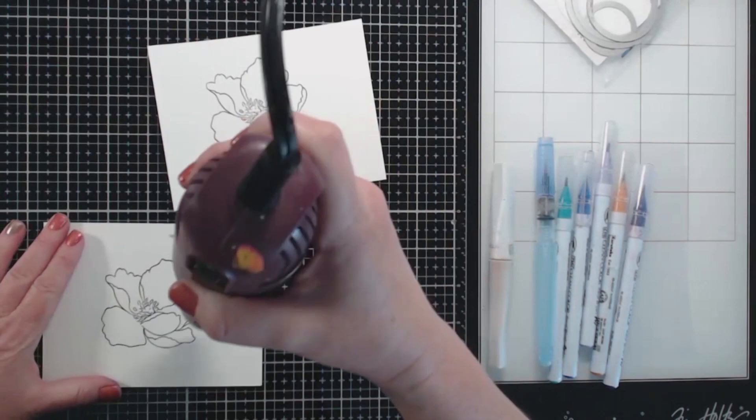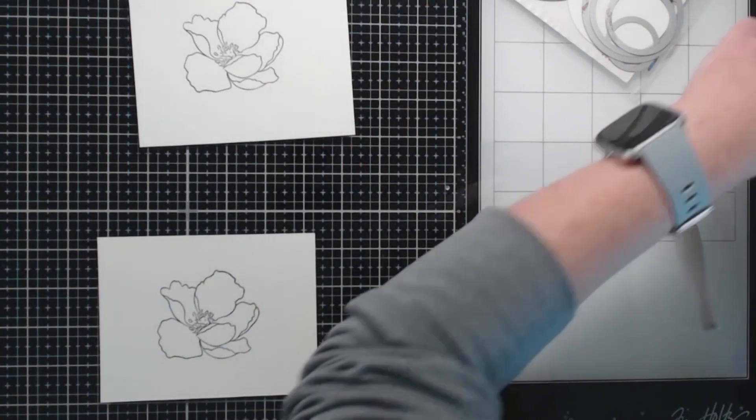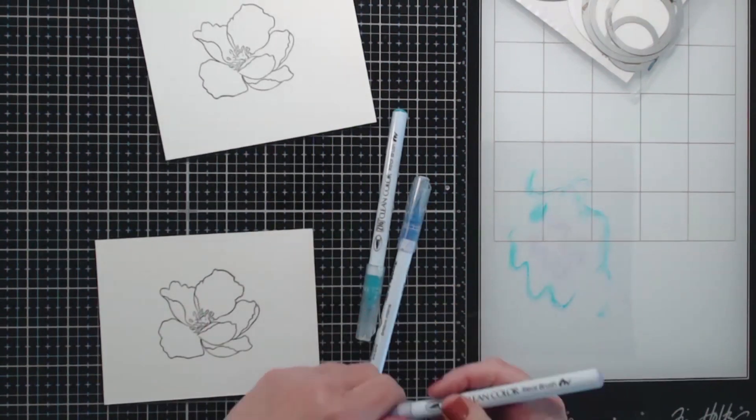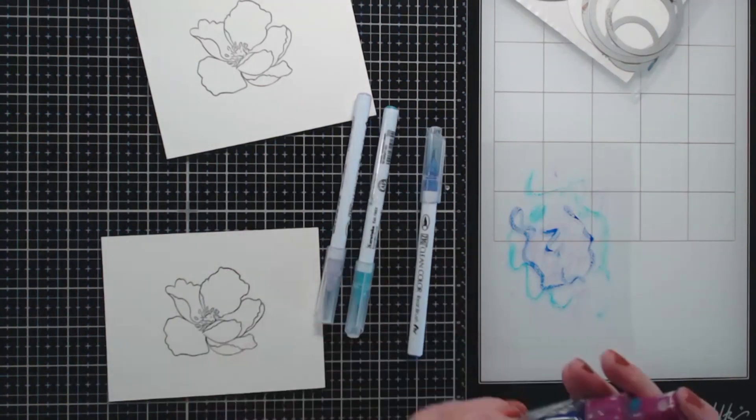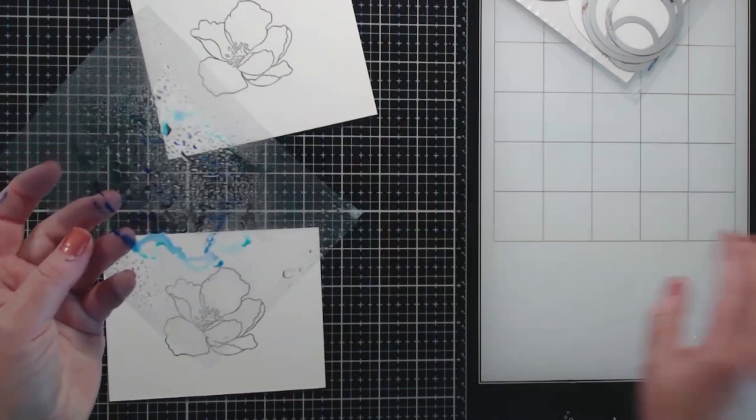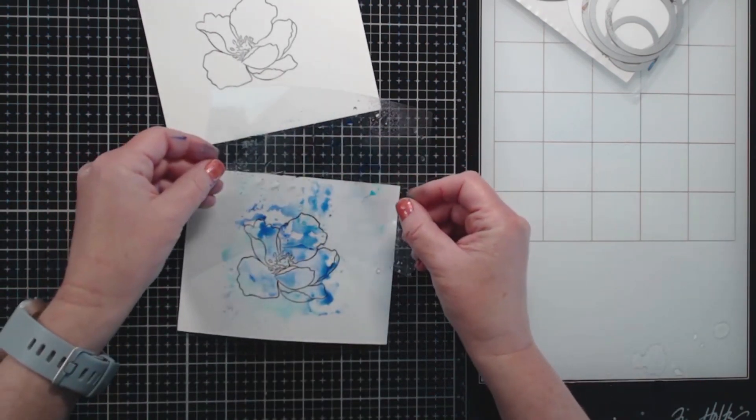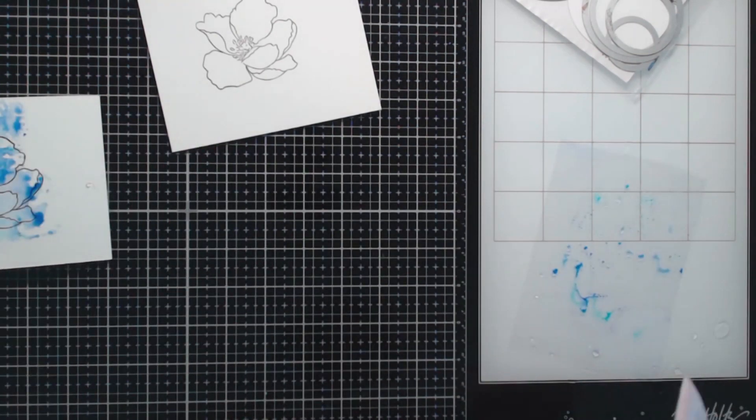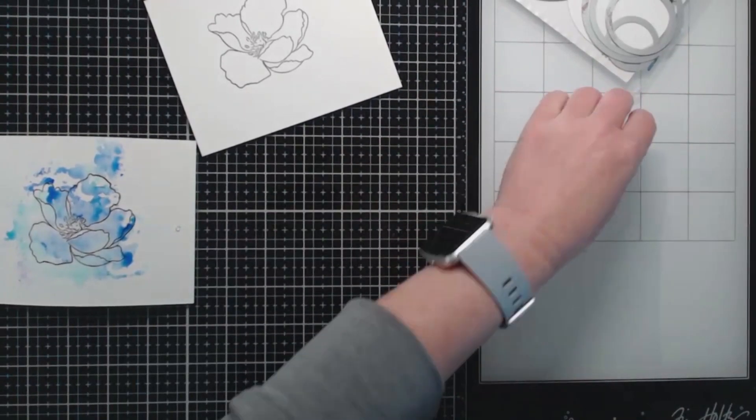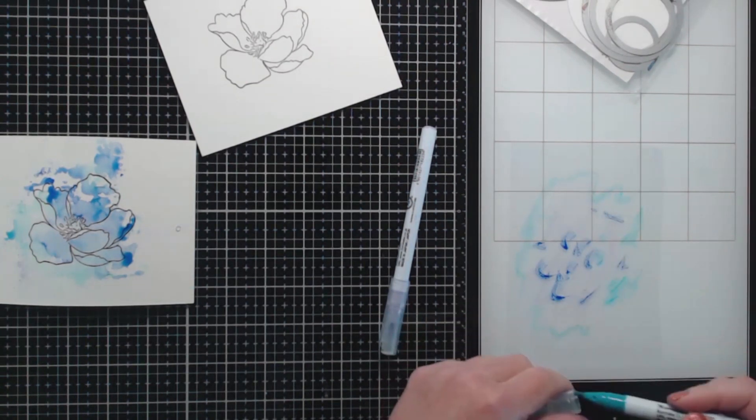Here I have stamped the outline of the flower using Hero Arts black ink. I'm using Canson 140 pound watercolor paper and I've taken three colors of ink - a light purple, a dark blue, and a teal color - and I'm coloring them onto this plastic sheet here. Then I'm going to squirt it with water and blend it in just a little bit, and then I'm going to smoosh it onto the image itself.